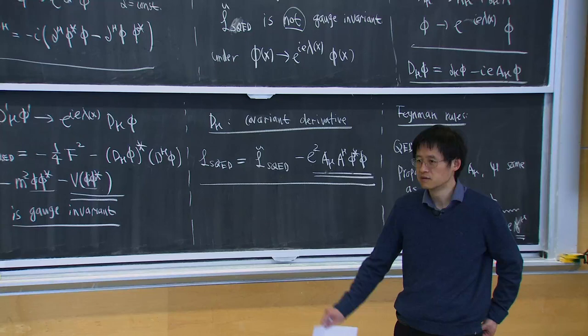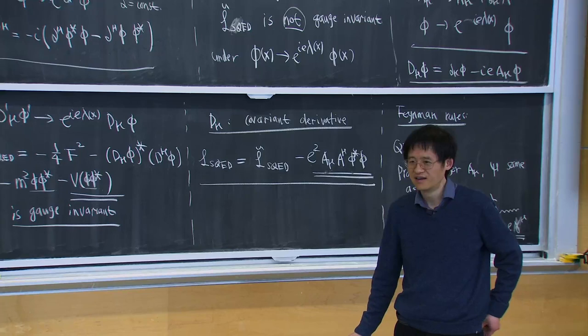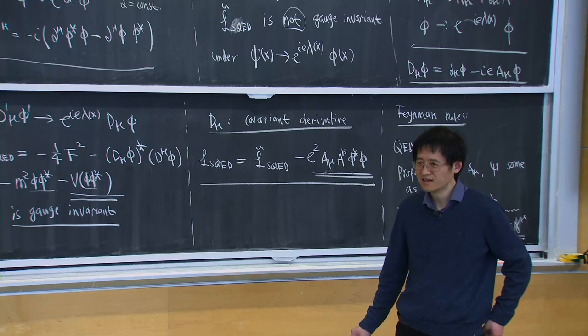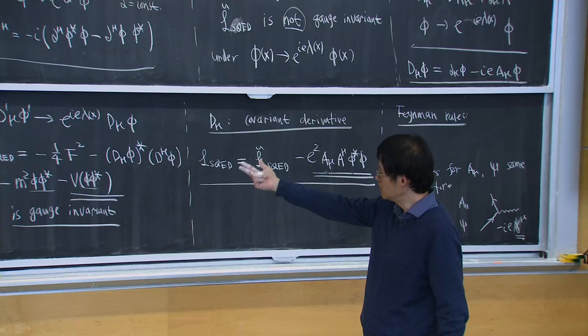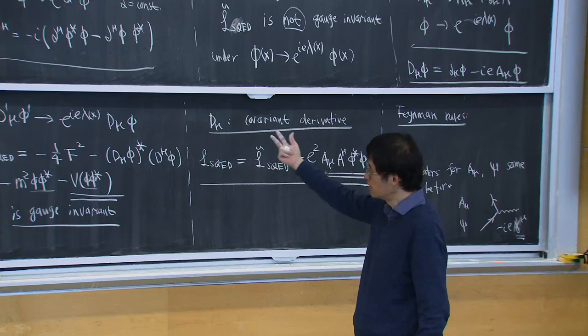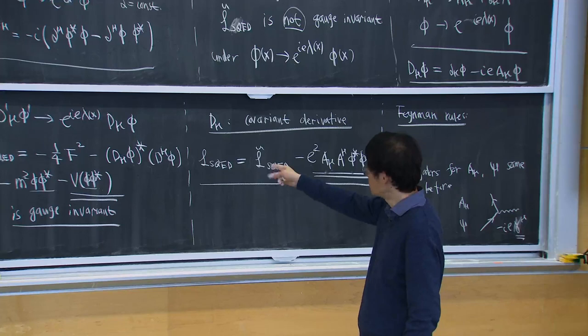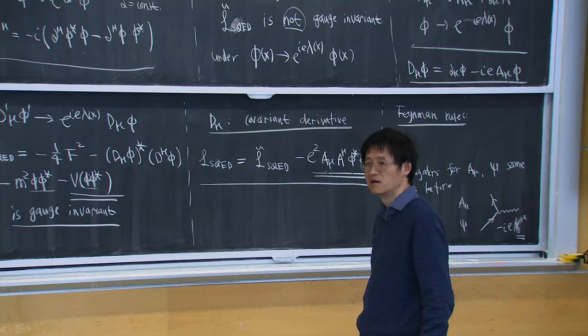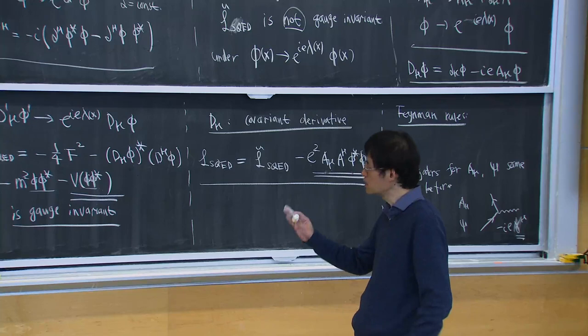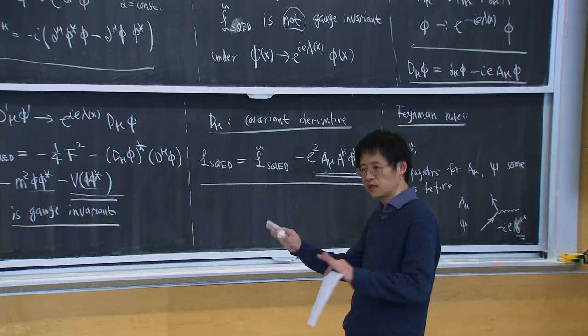Student: Can you combine the scalar QED and fermion QED Lagrangians? Instructor: Yes, you can combine them — a theory with the electromagnetic field coupled both to a charged scalar and charged fermions. The reason I separated them was just for convenience. You can certainly combine them.